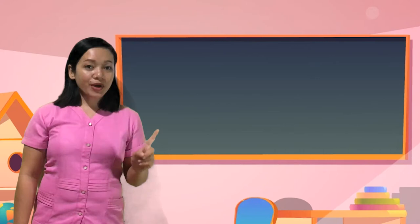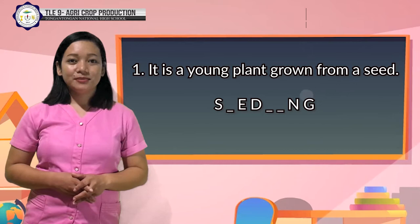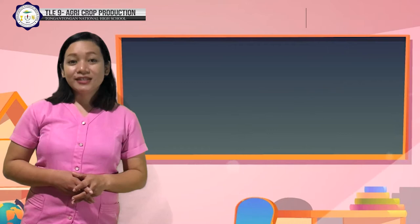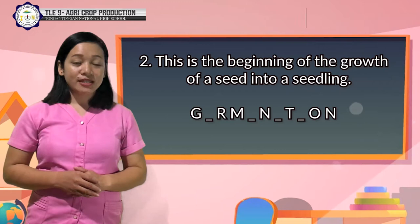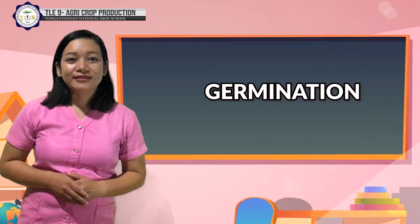Number 1: it is a young plant grown from a seed. The correct answer is — Seedling! Number 2: this is the beginning of the growth of a seed into a seedling. The answer is — Germination! Number 3: it means removing some seedlings to make room for the growth of others. The answer is — Thinning!